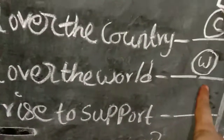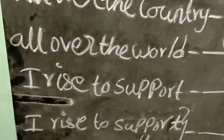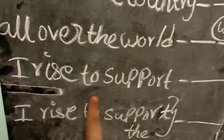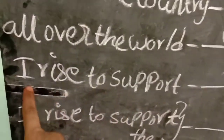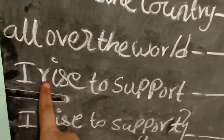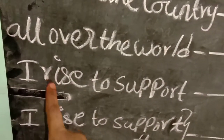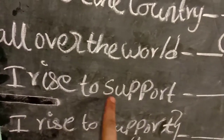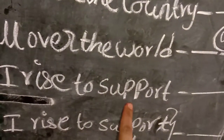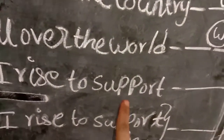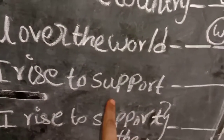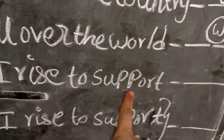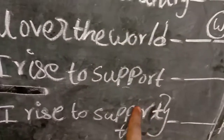All go with the Valid. I rise to support. This is the I, R and S. This is the 2P. That is the support.